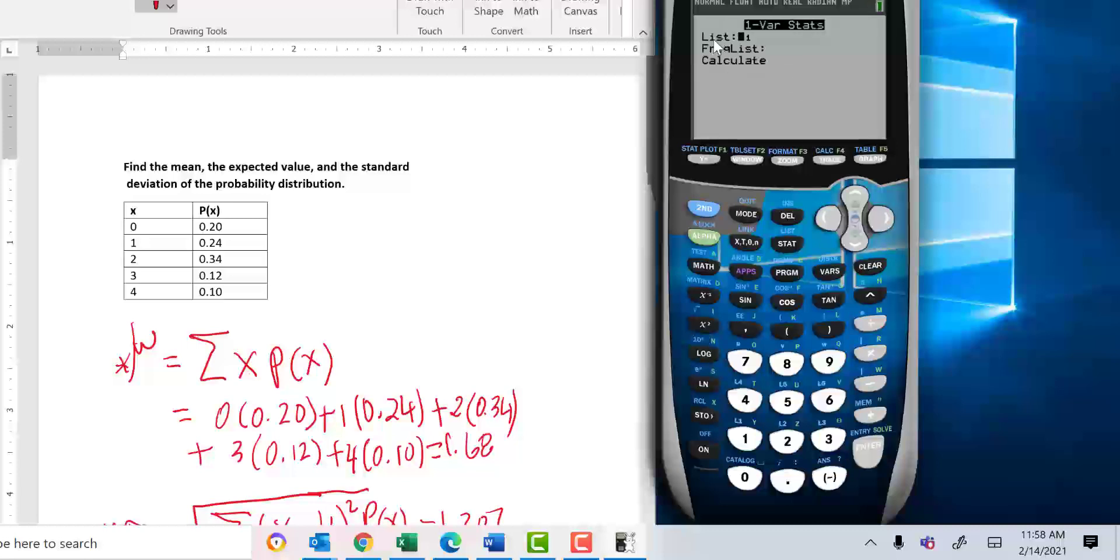If you get this screen, here's what you have to make sure of. Your x values are in L1 and the frequency list, you have to change it now to L2 because these are the probabilities. So second and number 2, you press the second key and number 2 and then calculate and here you go. You get 1.68. You see the answer matches right there and then the standard deviation is 1.2073. So this is how you do this using your calculator.